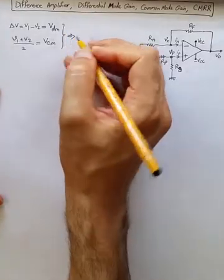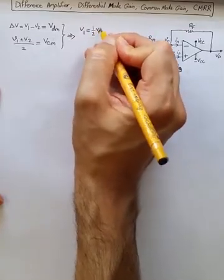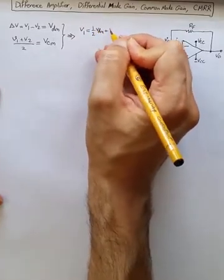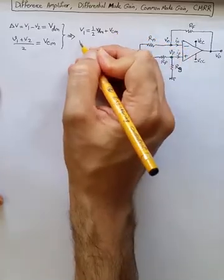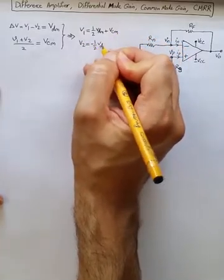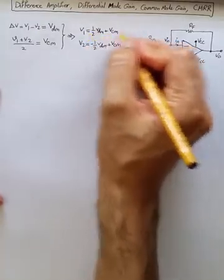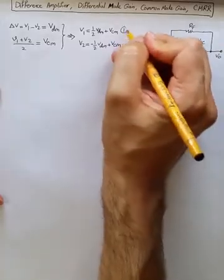From here, we can rewrite V1 as half of Vdm plus voltage of common mode, and we can say V2 is minus 1 over 2 Vdm plus Vcm. Let's name these as equations 1 and 2.